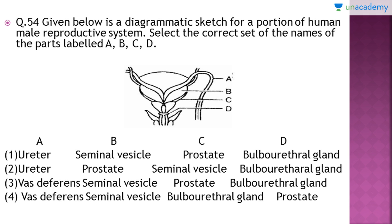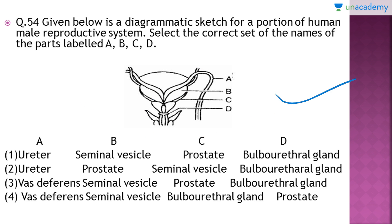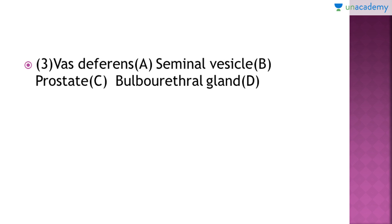Question number 54: Given below is a diagrammatic sketch of a portion of the human male reproductive system. Select the correct set of names for parts labeled A, B, C, and D. The right answer is option number three: part A is vas deferens, B is seminal vesicle, C is prostate gland, and D is bulbourethral gland. The structure of the male and female reproductive tract is very important.